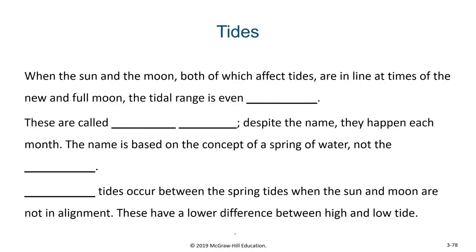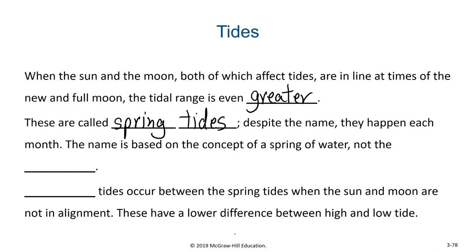When the sun and moon — both of which affect tides — are in line at times of the new and full moon, the tidal range is even greater. These are called spring tides, not because of the season of spring, but because of the concept of a spring of water — a sudden bursting of water. They happen each month and the name comes from that concept, not from the season.